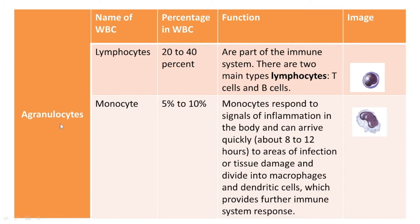Next we are going to understand about agranulocytes — they are lymphocytes and monocytes. The percentage of lymphocytes, which comes just after neutrophil in abundance, accounts for 20 to 40 percent. Its role is very important — it is a very important part of our immune system. Lymphocytes are of two types: T cells and B cells. There are many other things to understand, but due to shortage of time in this section we will not go into that area now.